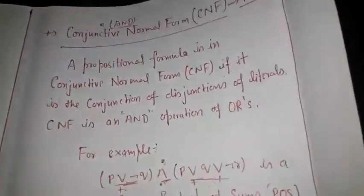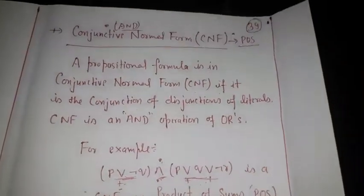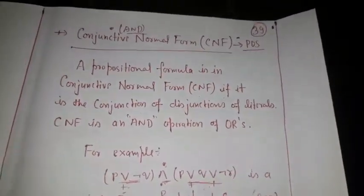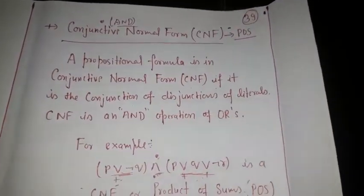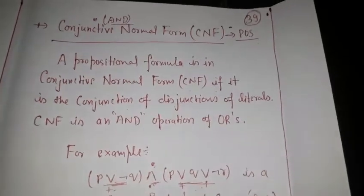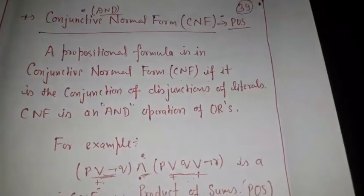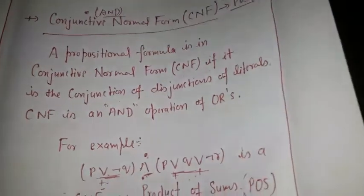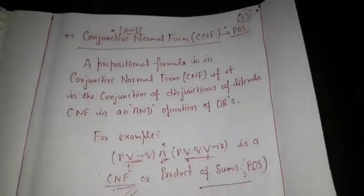Now, how to represent a propositional expression into CNF and DNF — there are two methods. The first method is the truth table method, which is a very easy method. The second method is using propositional logic properties to simplify and expand, converting any formula into CNF and DNF.